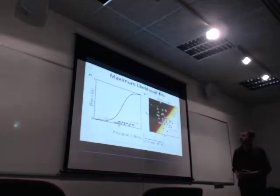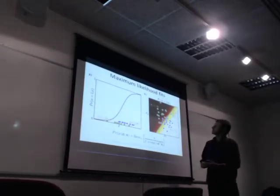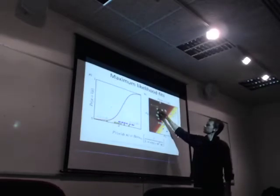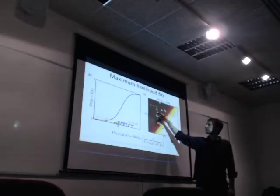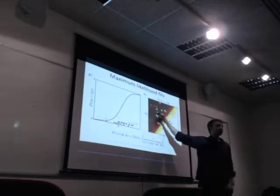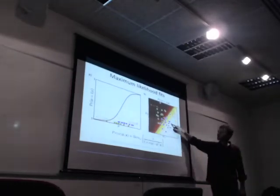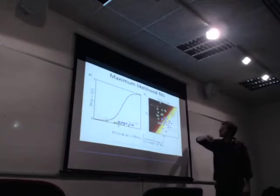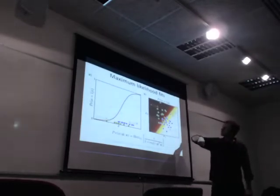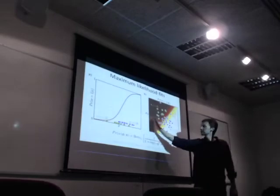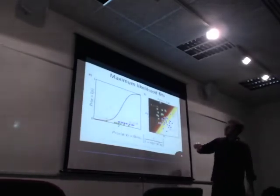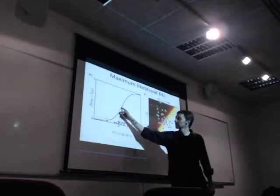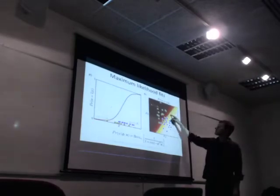If we look at a 2D version, we have example data points where each vector represents a training example: these were the male faces and these were the female faces. When we have this sigmoid function, you can see how it starts off low, rises, until it turns white at the top. If we look at the boundary — the 0.5 probability point — that's our decision boundary.